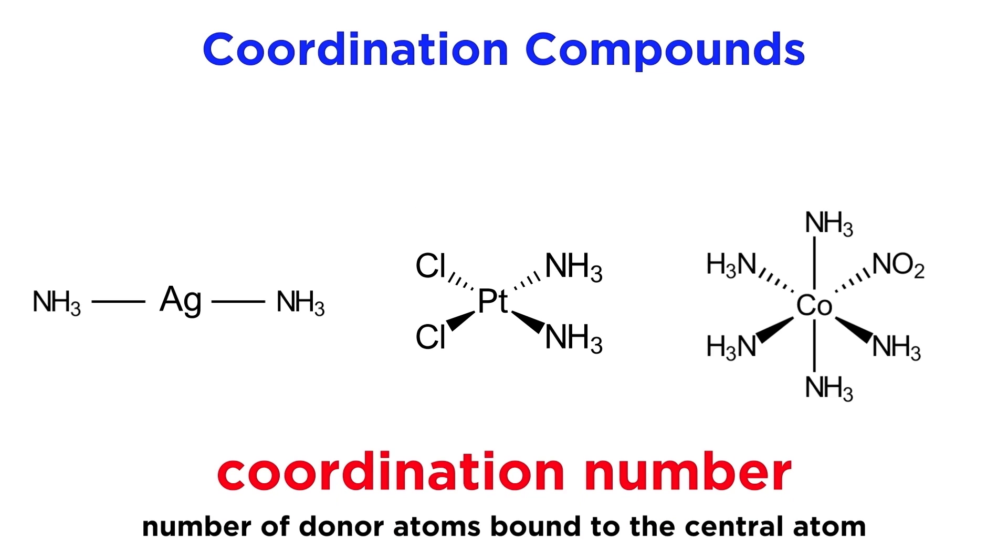The coordination number is the number of donor atoms that are bound to the central atom in the complex, so that would be 2, 4, and 6 for these three complexes respectively.